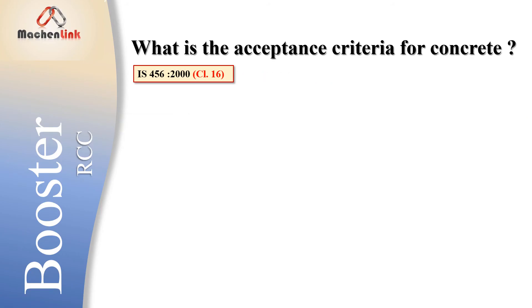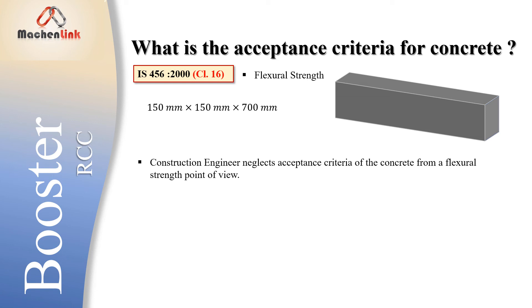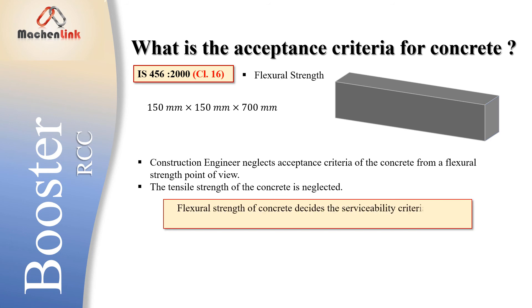The second acceptance criterion is flexural strength, measured on a beam of 150 mm × 150 mm × 700 mm. It is often observed that construction engineers neglect the acceptance criteria from a flexural strength point of view, because flexural strength is not so important in design — we represent it as modulus of rupture and the tensile strength of concrete is neglected. However, flexural strength decides serviceability criteria like deflection of a structure, so we must look at acceptance criteria from both compressive and flexural strength points of view.